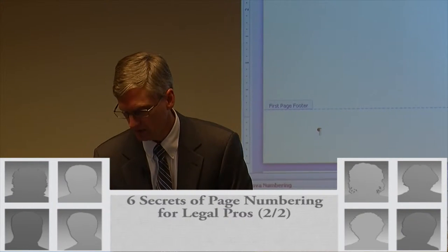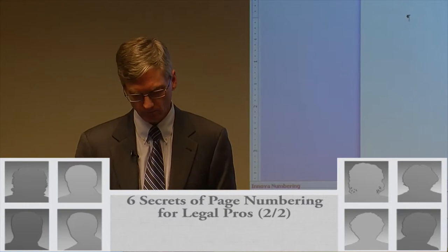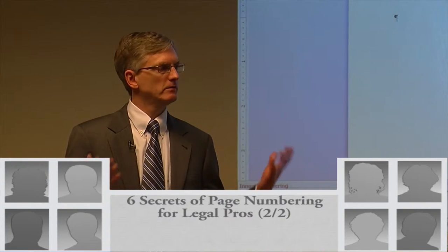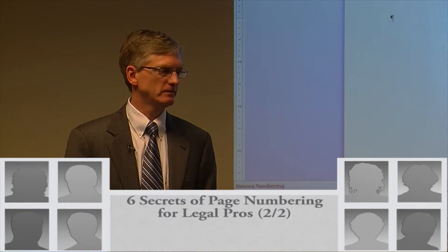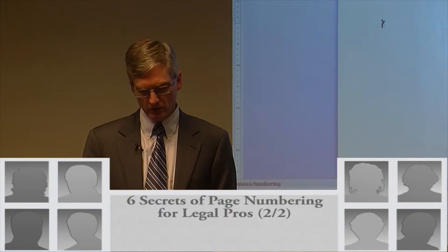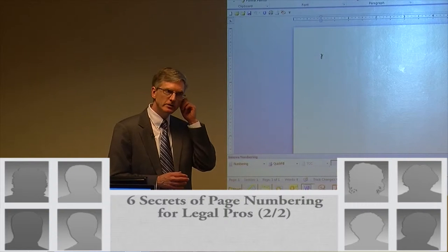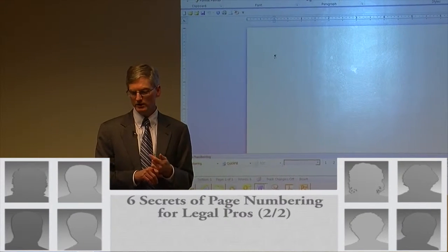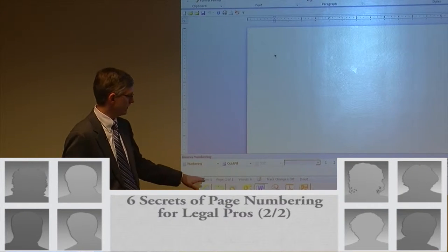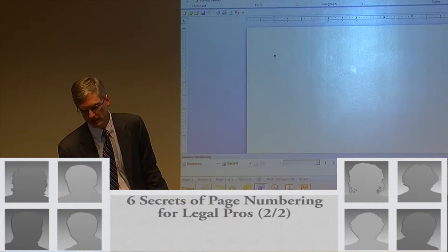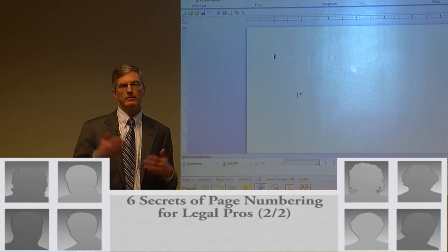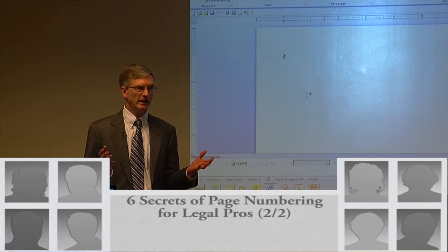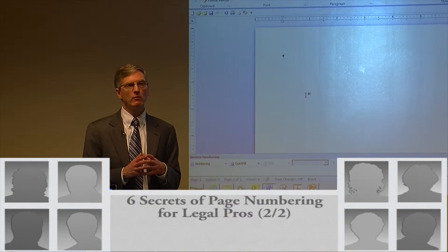First, I'm going to get a blank new document and give you a skeleton document. The first thing I want to do is section it. Every document starts with one section — notice here it says section one. When I insert a section break, I'm going to have two sections. I have to insert section breaks if I want different page numbering throughout my document.